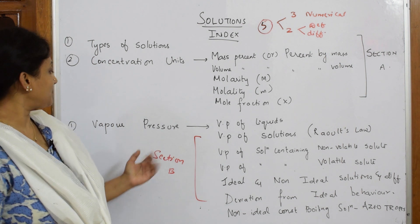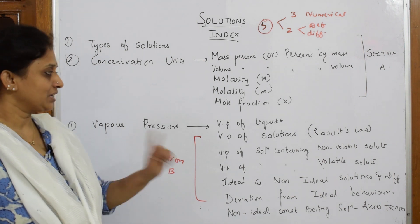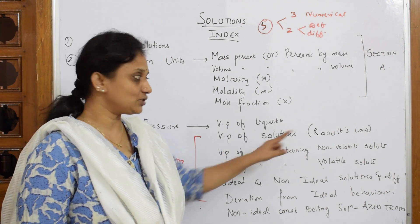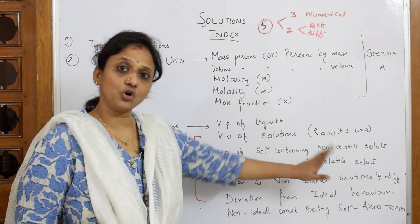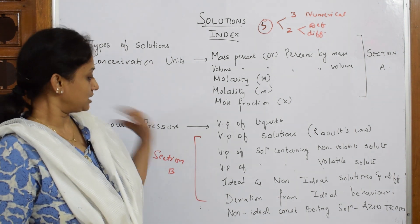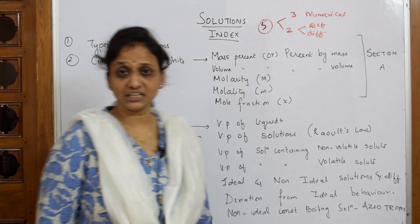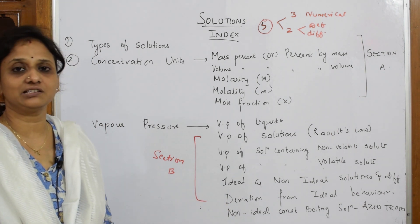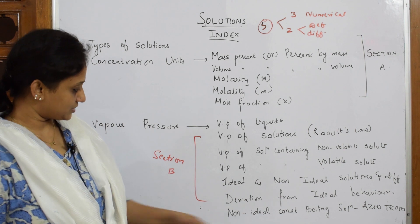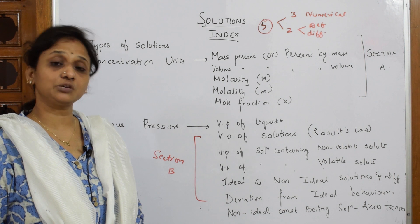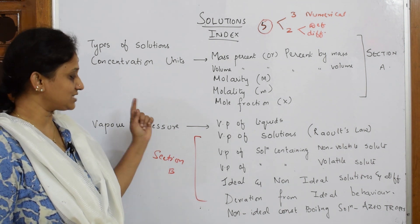In Section B, we'll be studying the concept of vapor pressure in liquids and solutions. That includes Raoult's law. Apart from that, you also have vapor pressure of solutions containing two types of solutes — volatile and non-volatile solutes. I'll also be teaching you about ideal solutions and non-ideal solutions and their differences, which was asked in last year's board paper. After that, deviations from ideal solutions — I'll explain why solutions show positive or negative deviation — and then non-ideal solutions with constant boiling mixtures, called azeotropes.